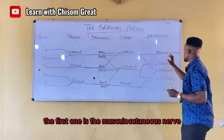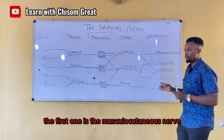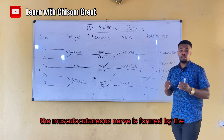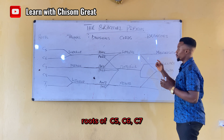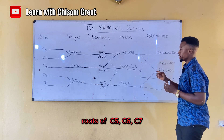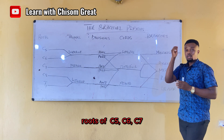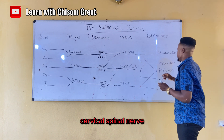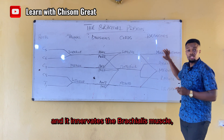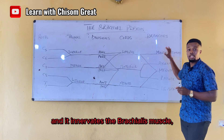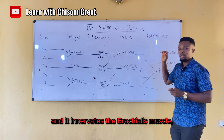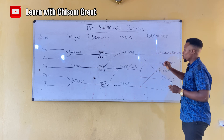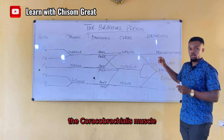The first one is the musculocutaneous nerve. The musculocutaneous nerve is formed by the roots of C5, C6, and C7 cervical spinal nerves. It innervates the brachialis muscle, the biceps brachii, and the coracobrachialis muscle.